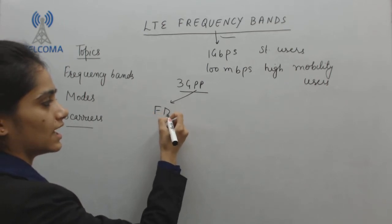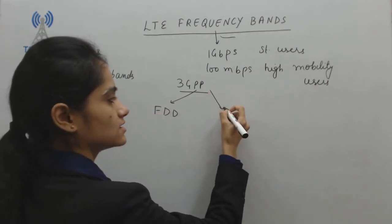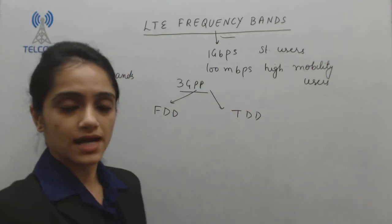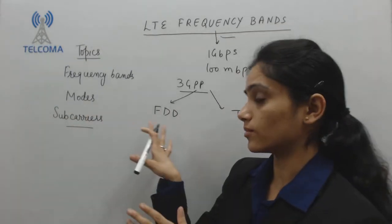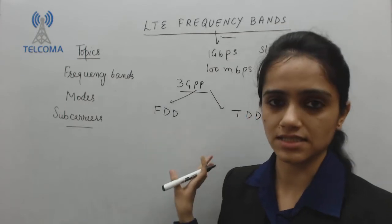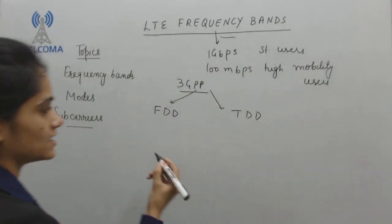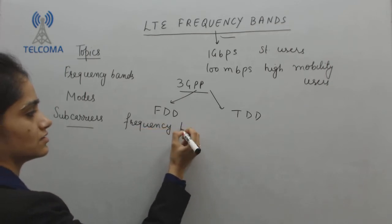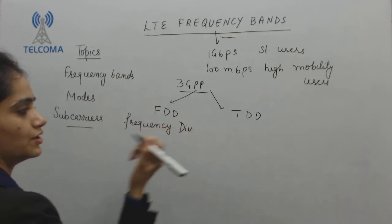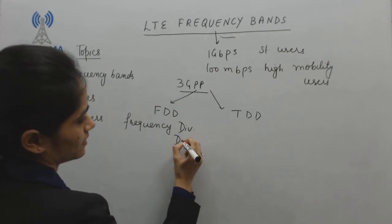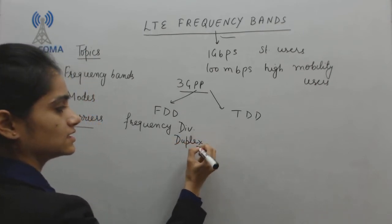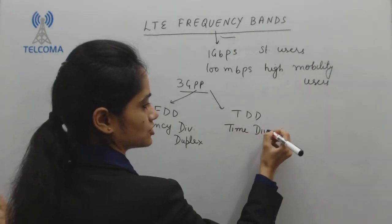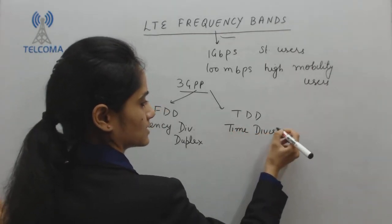Those two modes are FDD and TDD. You have frequency bands available in both modes — either you opt for FDD or TDD. FDD is Frequency Division Duplex and TDD is Time Division Duplex.